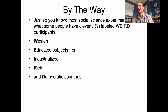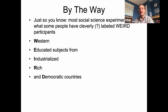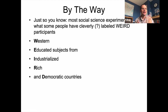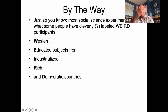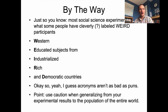It turns out this is not entirely arbitrary — if you're living in one of these societies, you probably have more wherewithal to run social science experiments in the first place. But the problem is that you can't necessarily assume that the way people operate in Canada or the U.S. applies to everybody around the entire world. The general point is to use caution when generalizing from your experimental results to the population of the entire world.